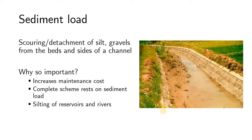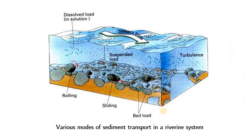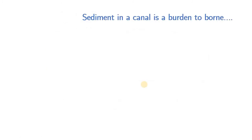Whenever sediment transport is referred to, one has to look into the actual modes of sediment transport in a riverine system. As given in the diagram, there is a stream flowing in one direction, and you have certain loads such as suspended load and dissolved load. Dissolved load is obviously present in solution form, and all these are formed whenever turbulence is introduced. There are two types of sediment loads: bed load and suspended load.